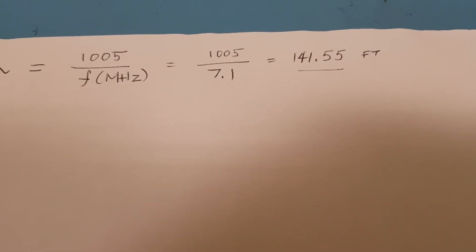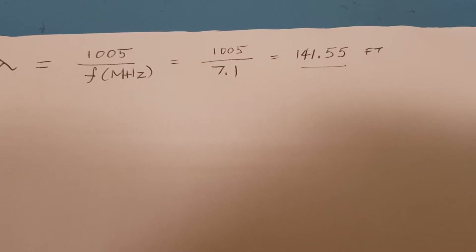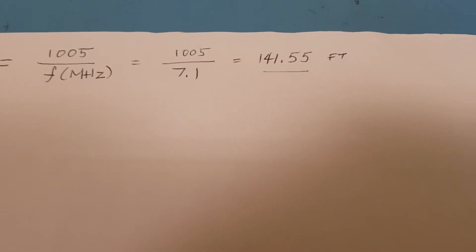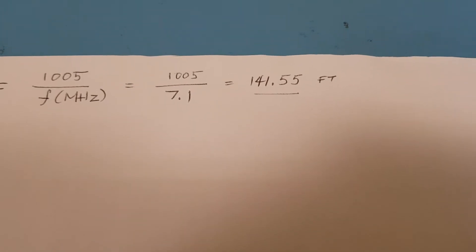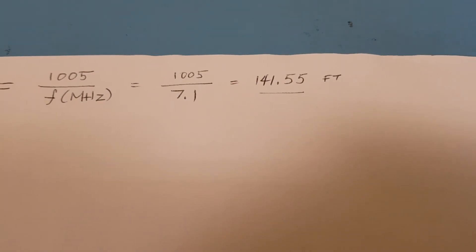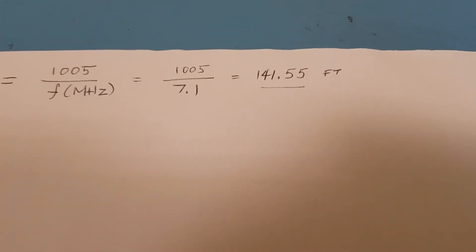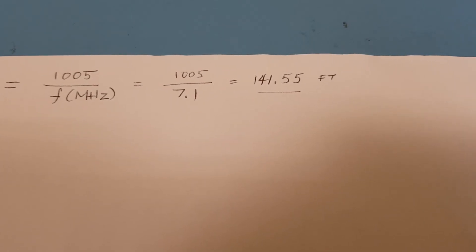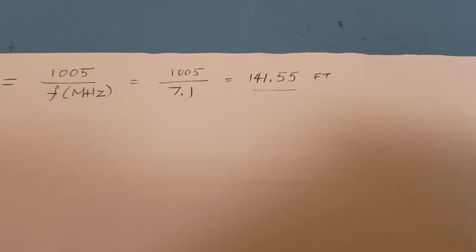So with this formula I got a length of 141.55 feet. As a tip, do not cut the wire exactly as what you get on the formula. You should always start long and then trim the antenna maybe one inch at a time to bring the antenna into resonance.